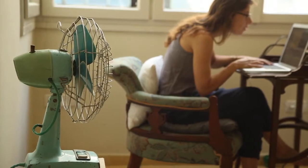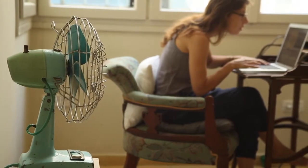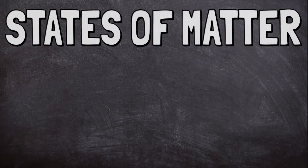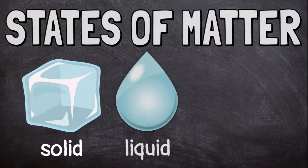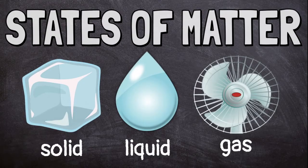You can see your desk, but you can't see the air. That's because they're different states of matter. There are three main states of matter: solid, liquid, and gas. To figure out which state matter is in, we look at its properties.